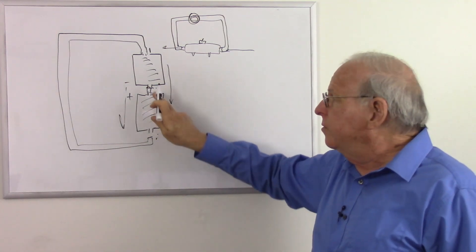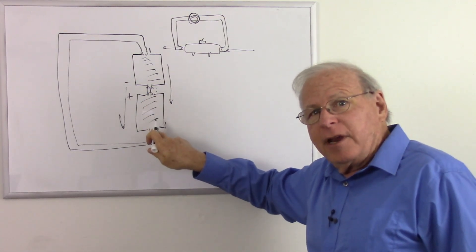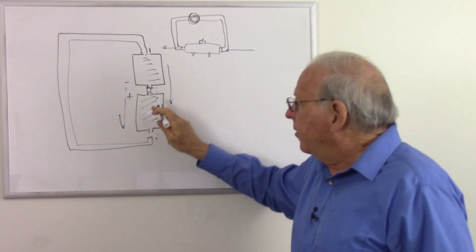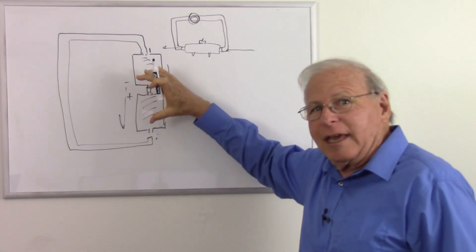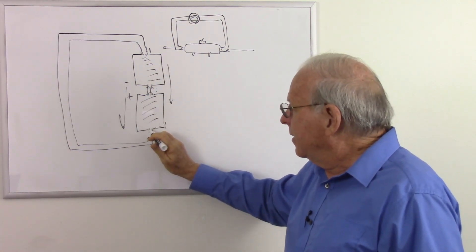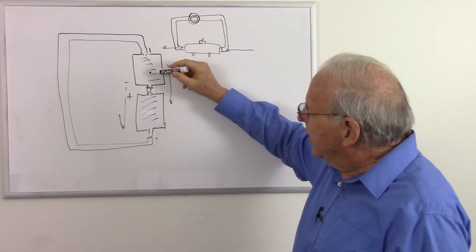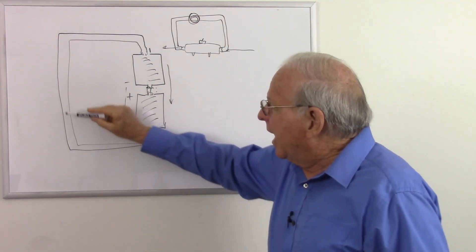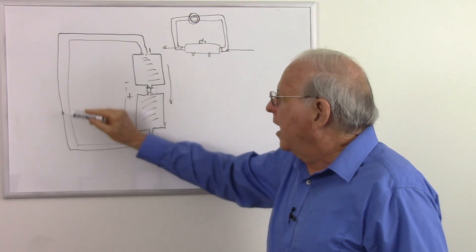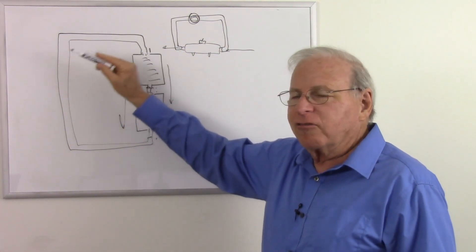But I still have to be able to get the electrons out of here and back out the other end because I can't suck them in unless I can get the other ones out. So make that connection. Now we have a complete connection. And now the batteries can circulate the electrons and eventually discharge themselves.